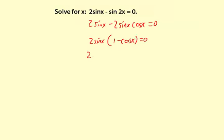Apply the zero product property. So 2 sine of x equals 0, and 1 minus cosine of x equals 0.